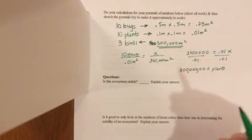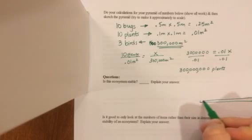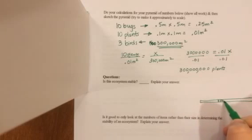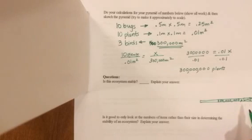That's the base of my pyramid of numbers. So it would look, not drawn to scale, like 300,000,000 plants. Again, the base of every food web, every ecosystem is the producers or the plants or the autotrophs. Those are all the same thing.